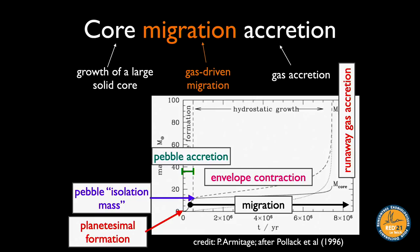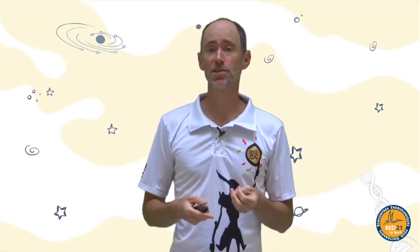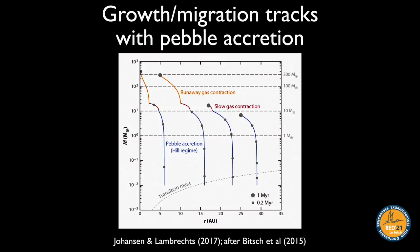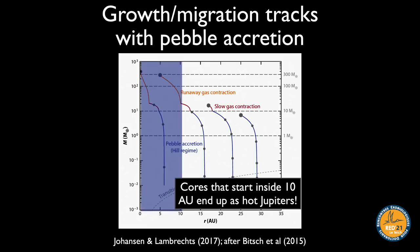The migration part begins as soon as the object reaches a few Earth masses, so it must be accounted for throughout. Here are some growth tracks from a simple analytical model incorporating planetesimal accretion, pebble accretion, and migration. Each track represents the growth seed of one planet starting at a given distance. As the object gets bigger it migrates inward, and as it undergoes different phases the trajectory changes — but it always goes inward.